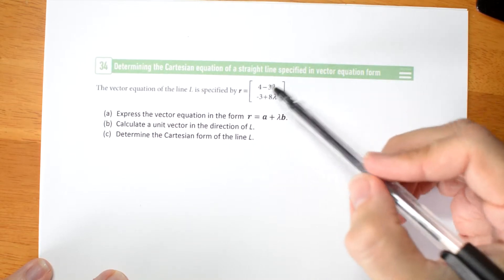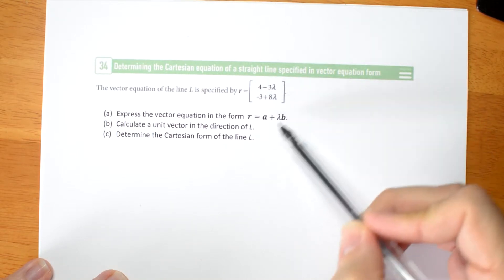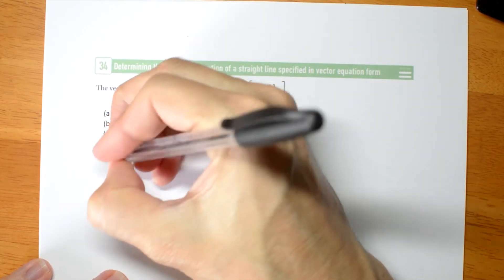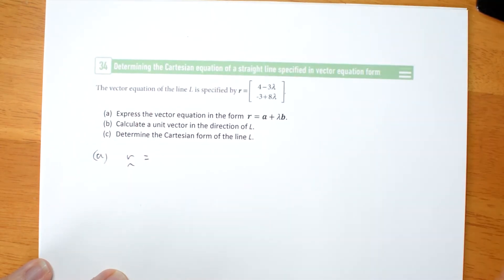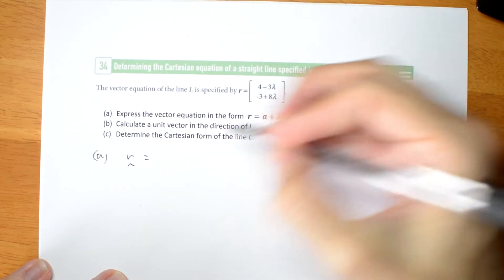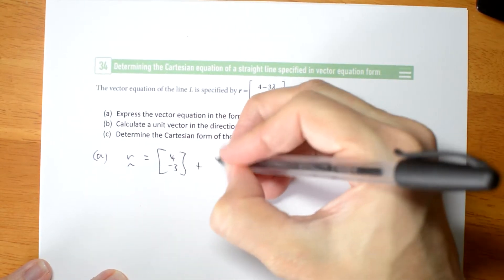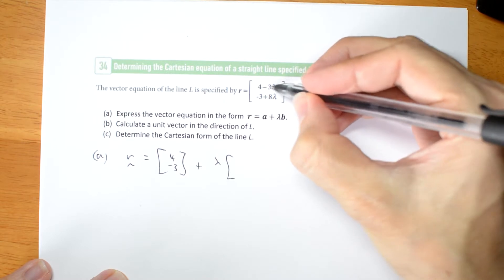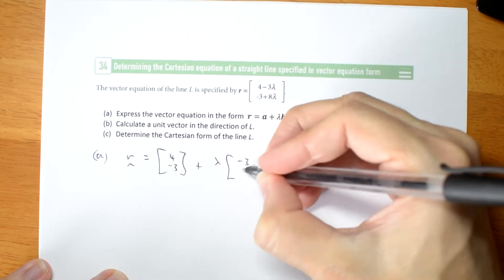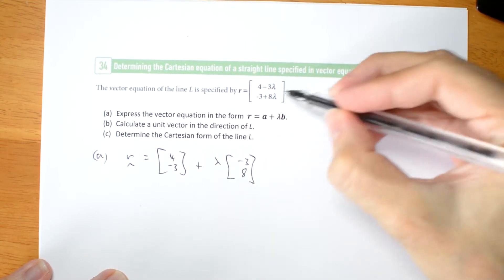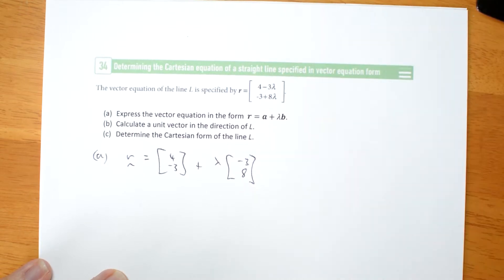Well, it's fairly easy to see from this how to write it like that. R is going to be the constants 4, negative 3 plus some multiple of negative 3 and plus 8. Just pull those numbers out of there.